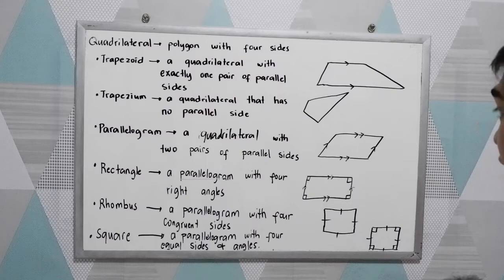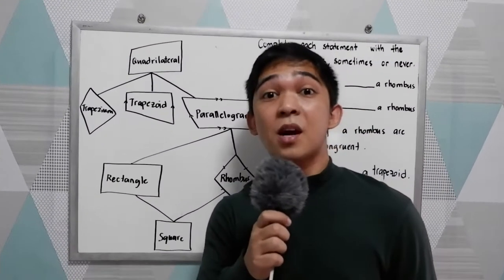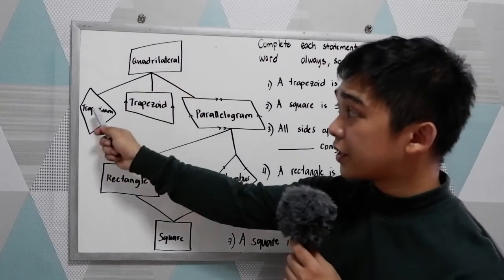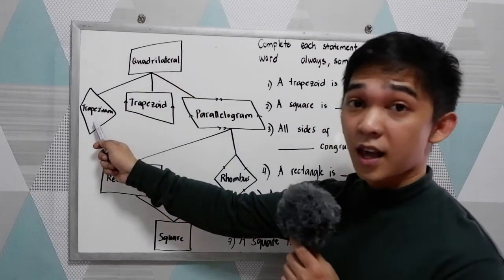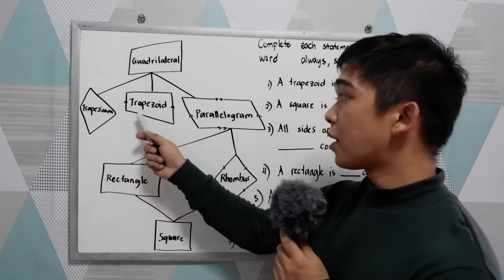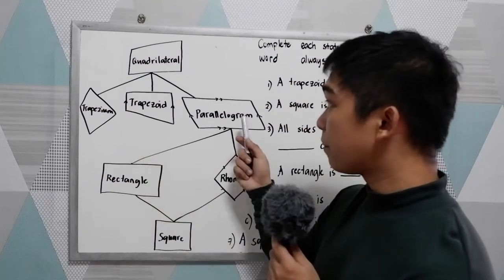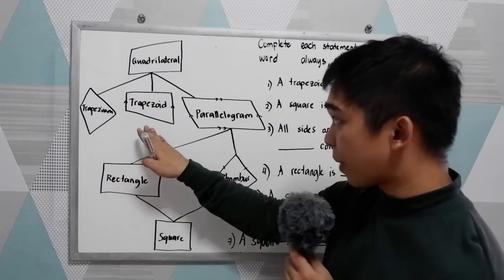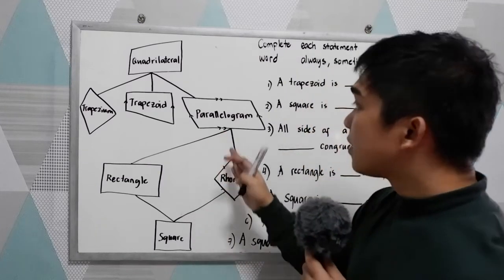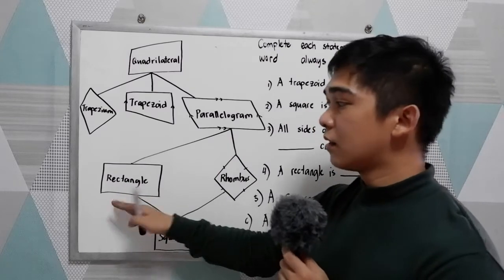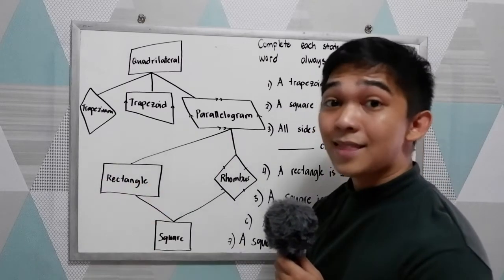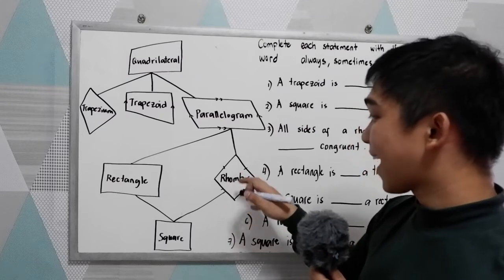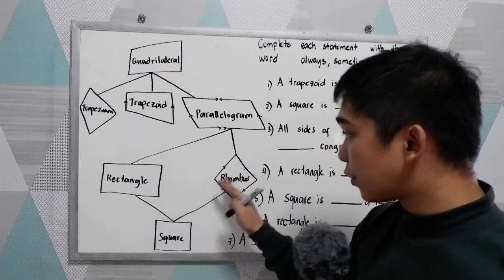So those are the kinds of quadrilaterals. Now we have the schematic diagram of quadrilaterals. Under quadrilateral, we have the trapezium — no sides are parallel; the trapezoid — one pair of parallel sides; and the parallelogram — two pairs of parallel sides. Under the parallelogram, we have the rectangle, where all angles measure 90 degrees; the rhombus, where all sides are congruent; and under both rectangle and rhombus, we have the square.